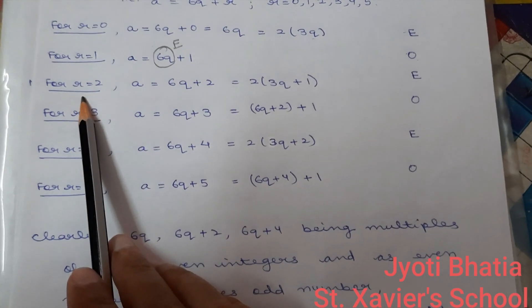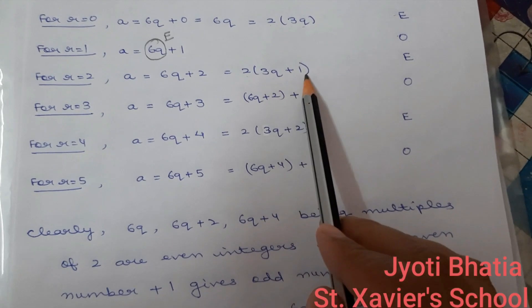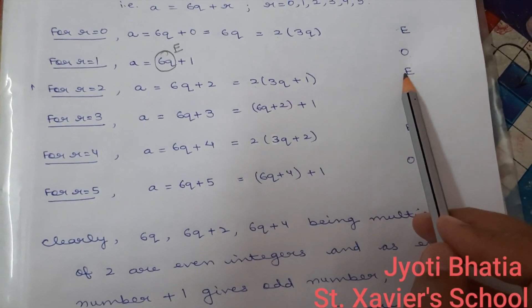For R equal to 2, A is equal to 6q plus 2. Taking 2 common, 3q plus 1. Multiple of 2, so it will be even.